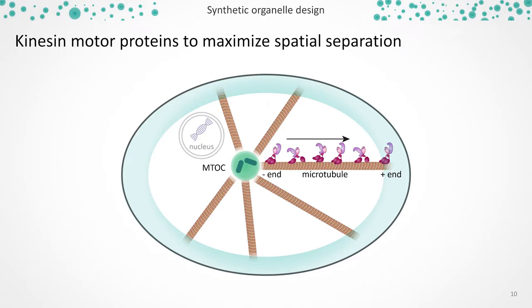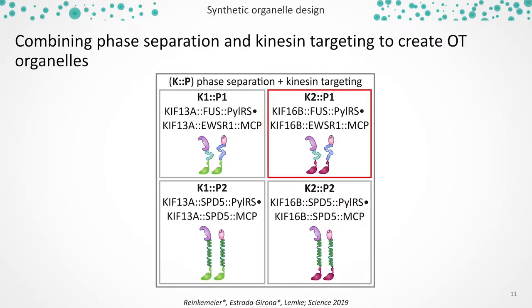Besides using phase separation, we also envisioned maximizing spatial separation by fusing our synthetic organelle to kinesin motor proteins that move towards the microtubule plus end. The naive idea is that, as the minus end of the microtubule is at the microtubule organizing center in the center of the cell, a plus-end-directed motor protein would constitutively move our organelle to the periphery, forming a layer of translational activity at the rim of the cell. We used two different kinesin motor proteins — KIF13A and KIF16B — and two different phase separation systems — FAS/EWSR1 and SPID-5. The best-working combination, highlighted in red, is KIF16B with FAS and EWSR1, two well-known human phase-separating proteins.